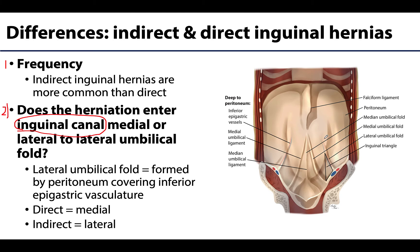The lateral umbilical fold, formed by peritoneum covering the inferior epigastric vessels, is a key landmark here. A direct inguinal hernia will enter the canal medial to the inferior epigastric vessels, whereas an indirect hernia will enter lateral to both the inferior epigastric vessels and the lateral umbilical fold. So direct will always be medial and indirect will always be lateral.